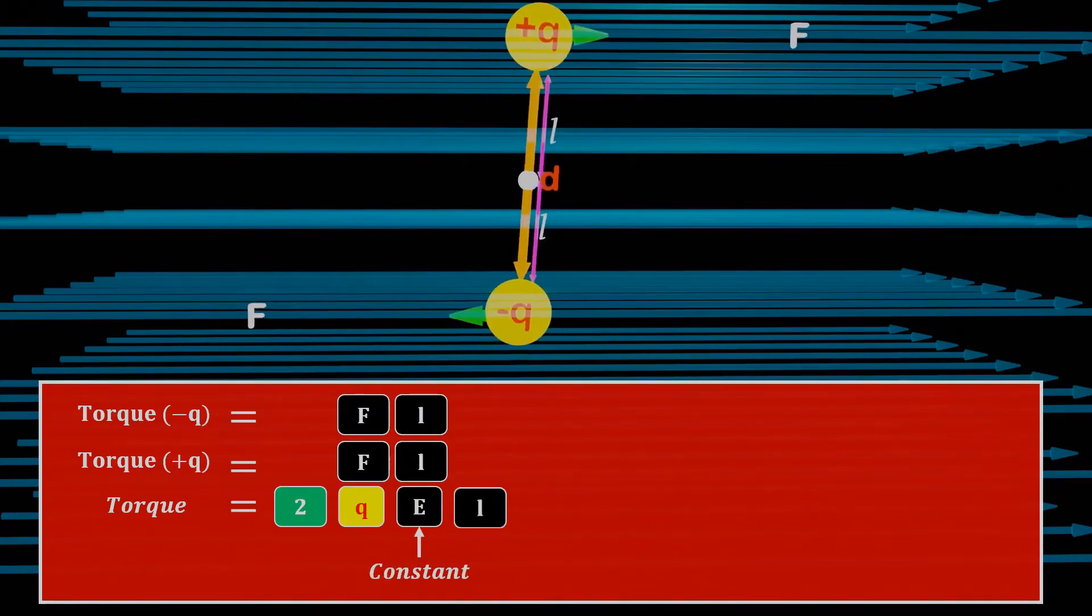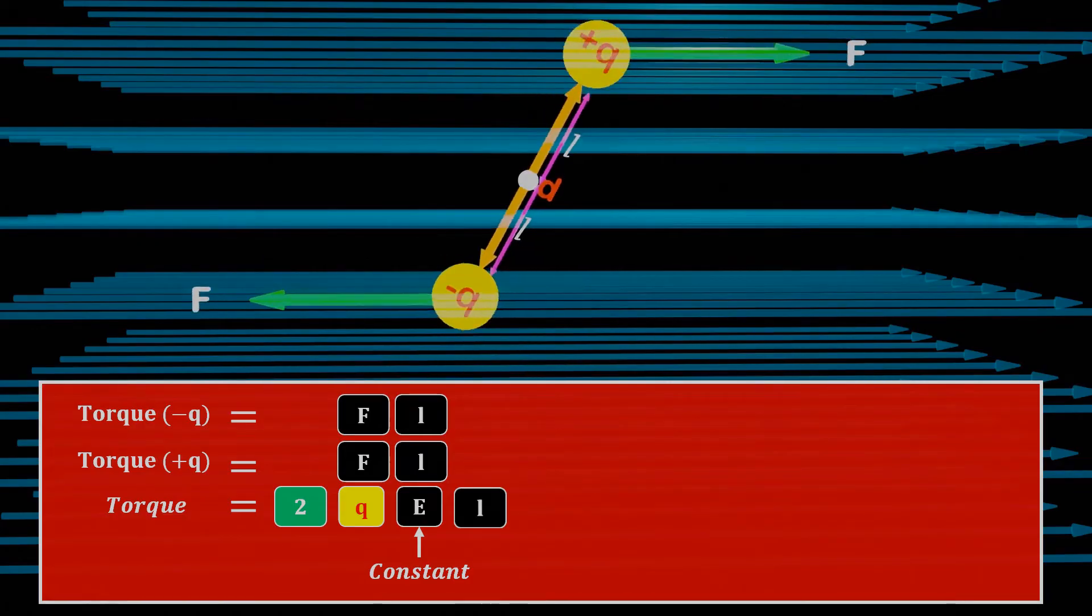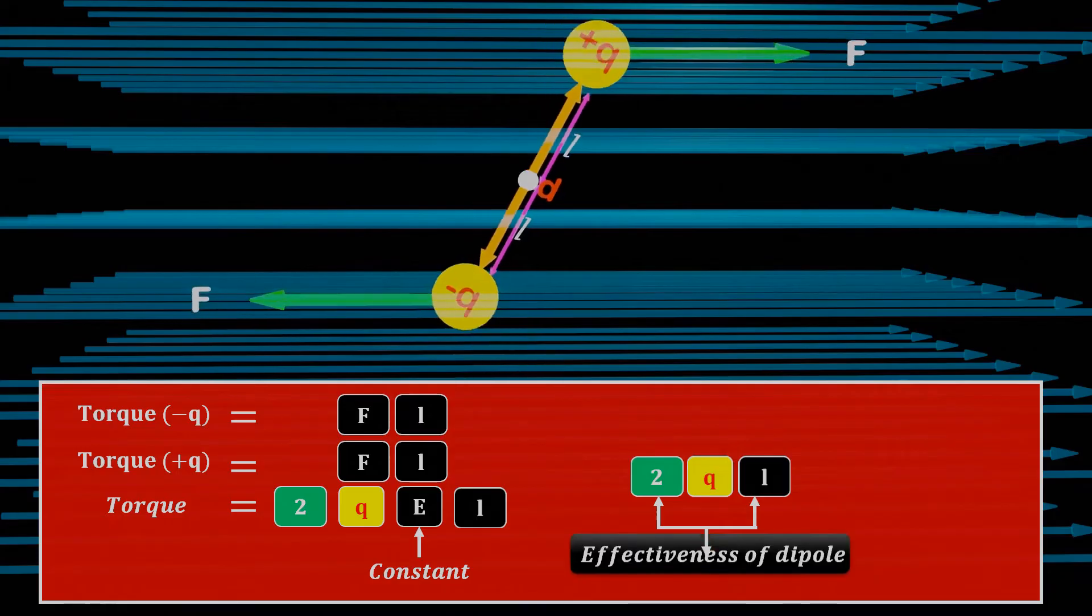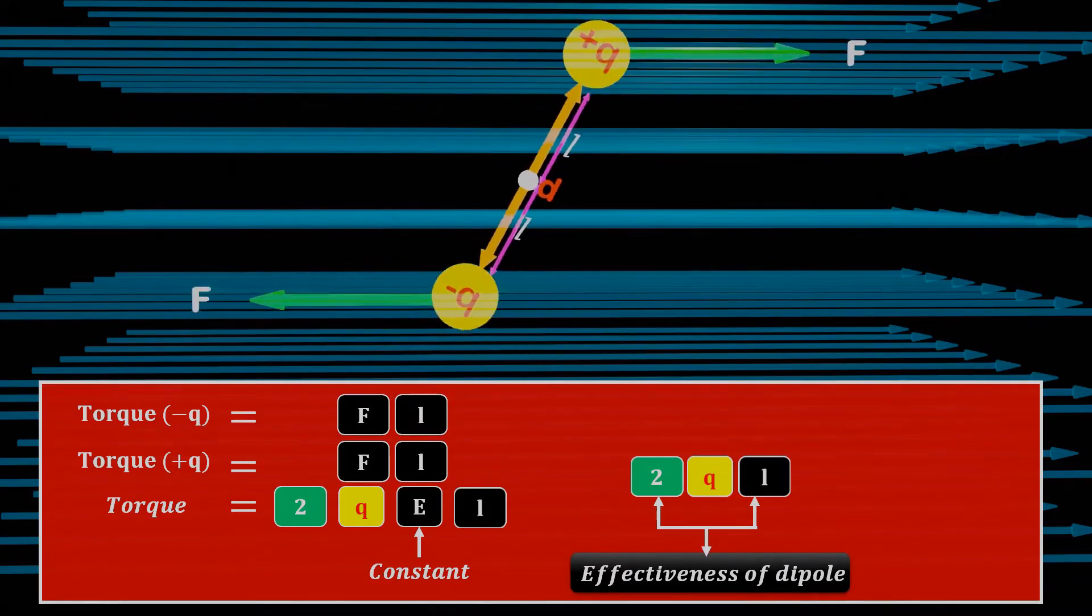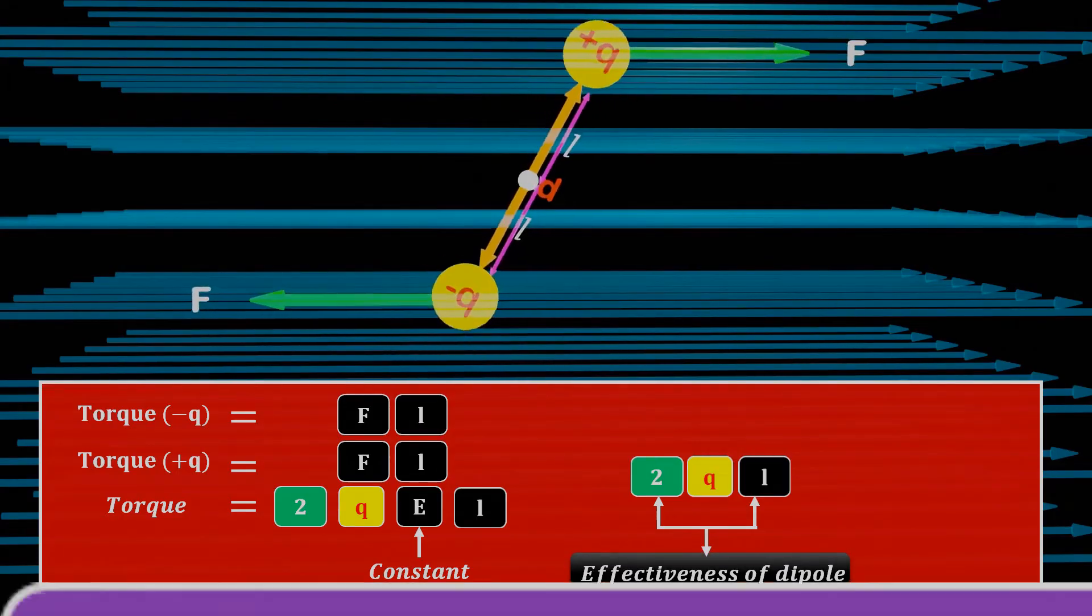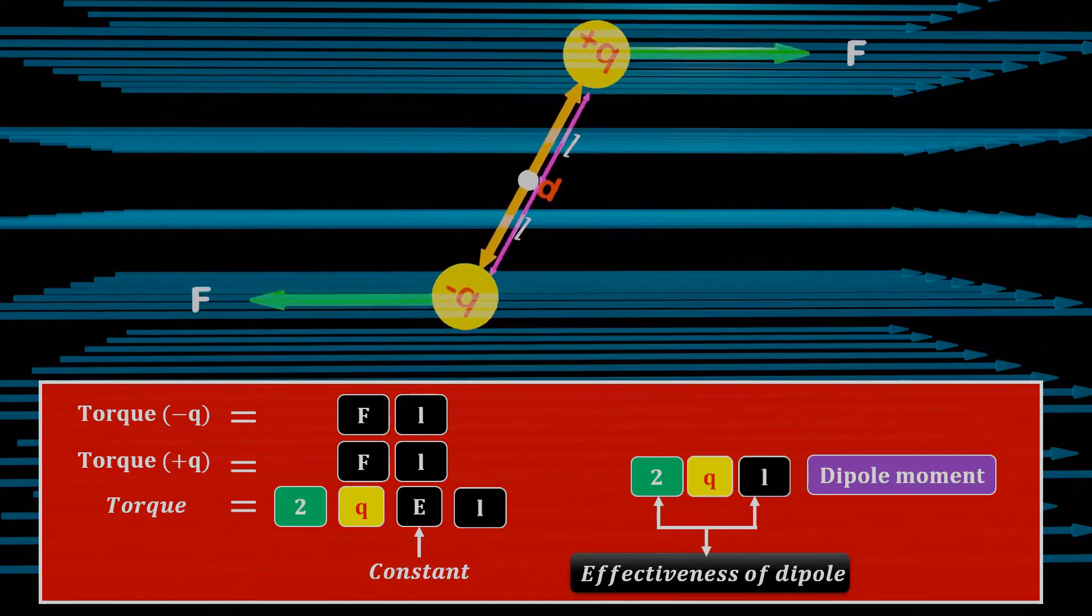If the electric field is kept constant, then the torque acting on the dipole depends on 2QL, which demonstrates the effectiveness of the dipole and is given a special name called the dipole moment, represented by the capital P.